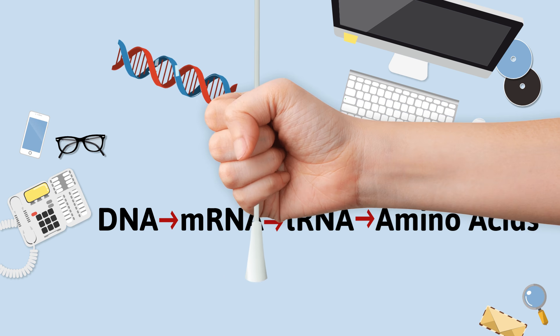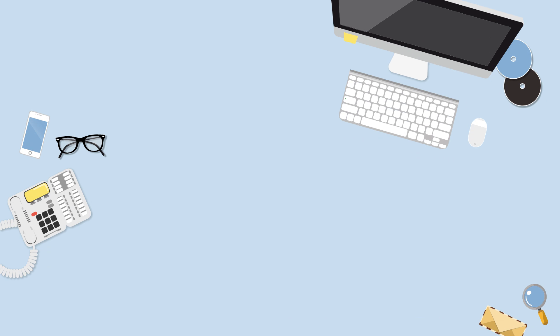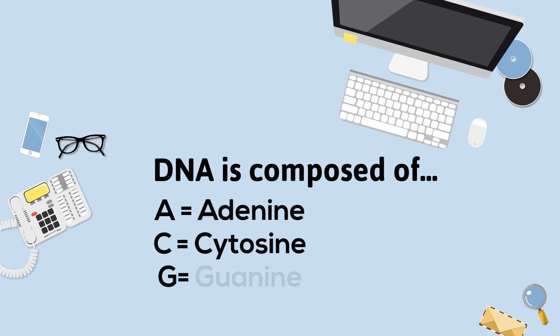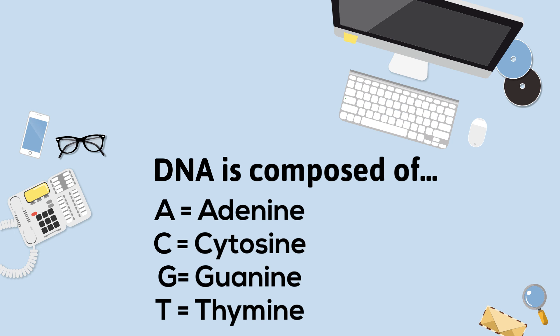DNA is made up of four bases: adenine, cytosine, guanine, and thymine. Let's shorten this to A, C, G, and T.